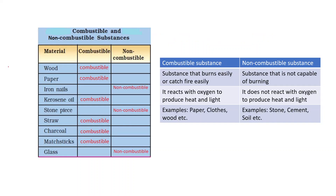Here are some substances which are combustible and non-combustible. Wood is combustible, paper is combustible, iron nail is non-combustible, kerosene oil is combustible, stone is non-combustible, straw is combustible, charcoal is combustible, matchsticks are combustible, and glass is non-combustible. We can differentiate between combustible and non-combustible substances.